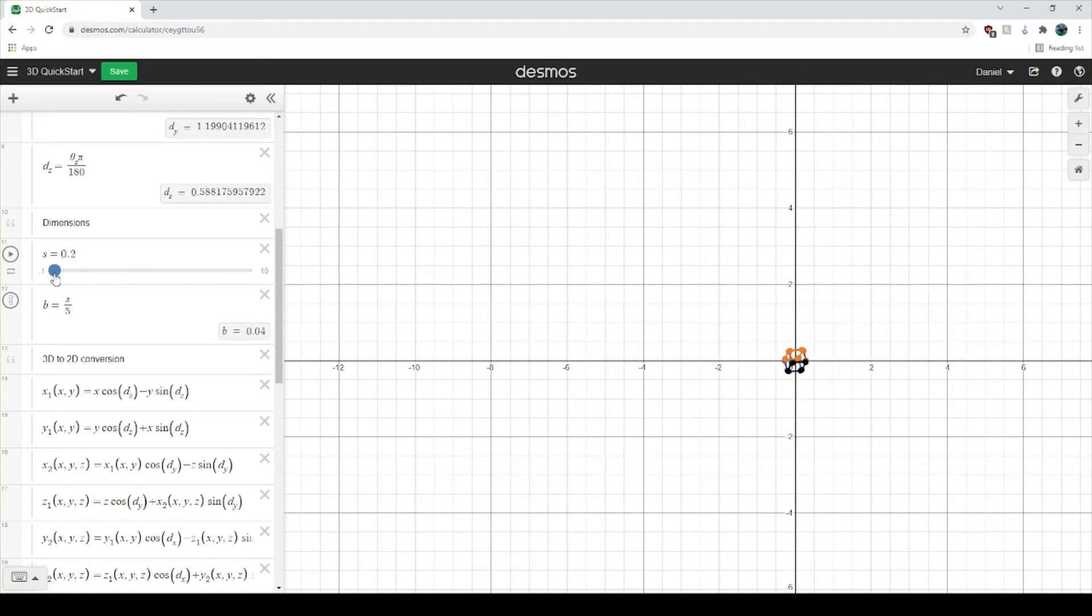You can shrink it down to 0.1 if you want to make it different. If you want to go smaller than 0.1 you can of course change the numbers.